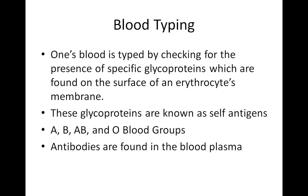Now let's take a look at blood typing. Do you know your blood type? What does it mean to have blood type O positive, or maybe AB positive or AB negative? One's blood is typed by checking for the presence of specific glycoproteins found on the surface of an erythrocyte's membrane — or the red blood cells membrane. These glycoproteins are known as self-antigens, so your body recognizes these as self, and your body's immune system does not attack them.